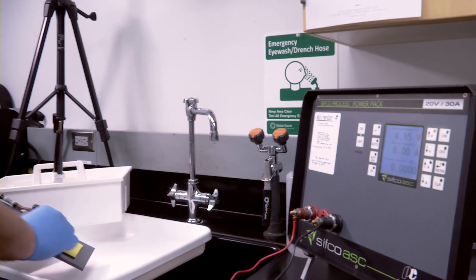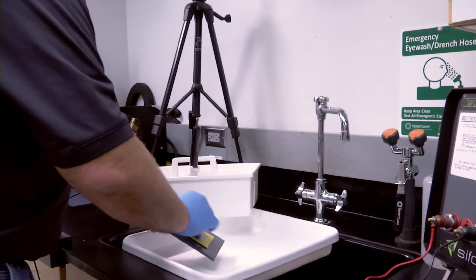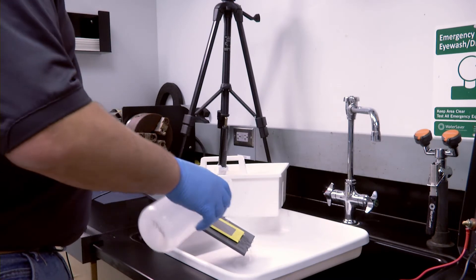The part is mechanically abraded with 120 grit aluminum oxide paper to roughen up the surface. It's rinsed thoroughly to remove any particles and then plated.